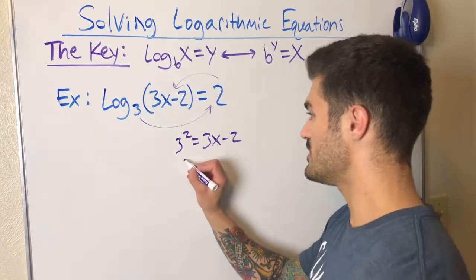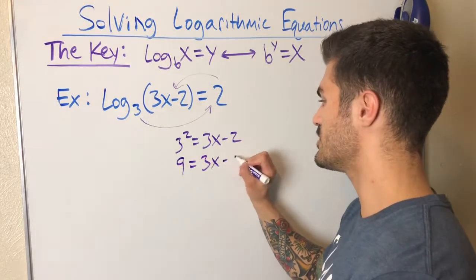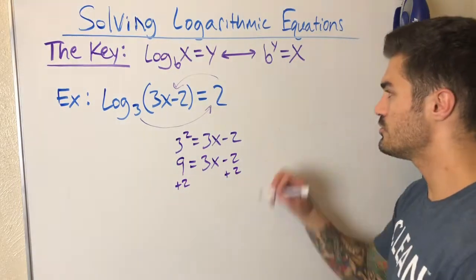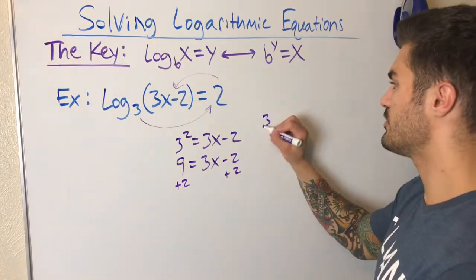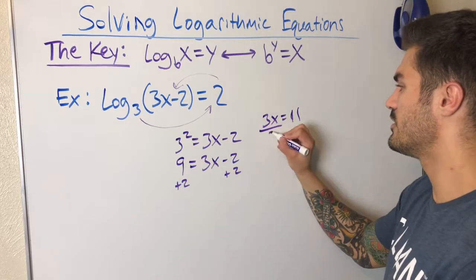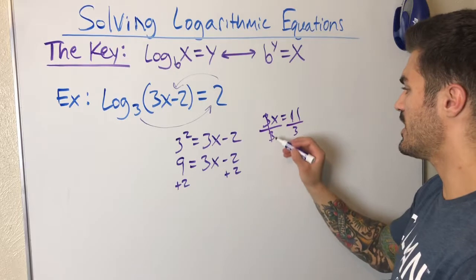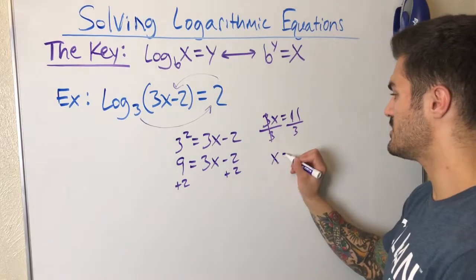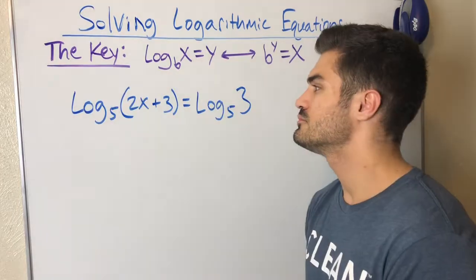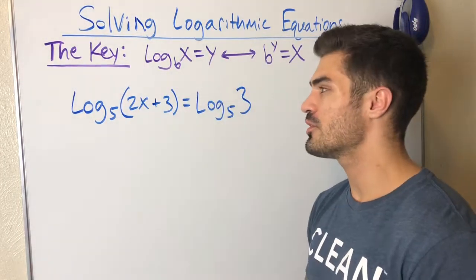Three squared is nine, so I have the simple linear equation 9 = 3x − 2. Adding two to both sides gives 3x = 11, then dividing both sides by three gives x = 11/3. Now it's getting a little trickier because we're seeing more than one logarithm.